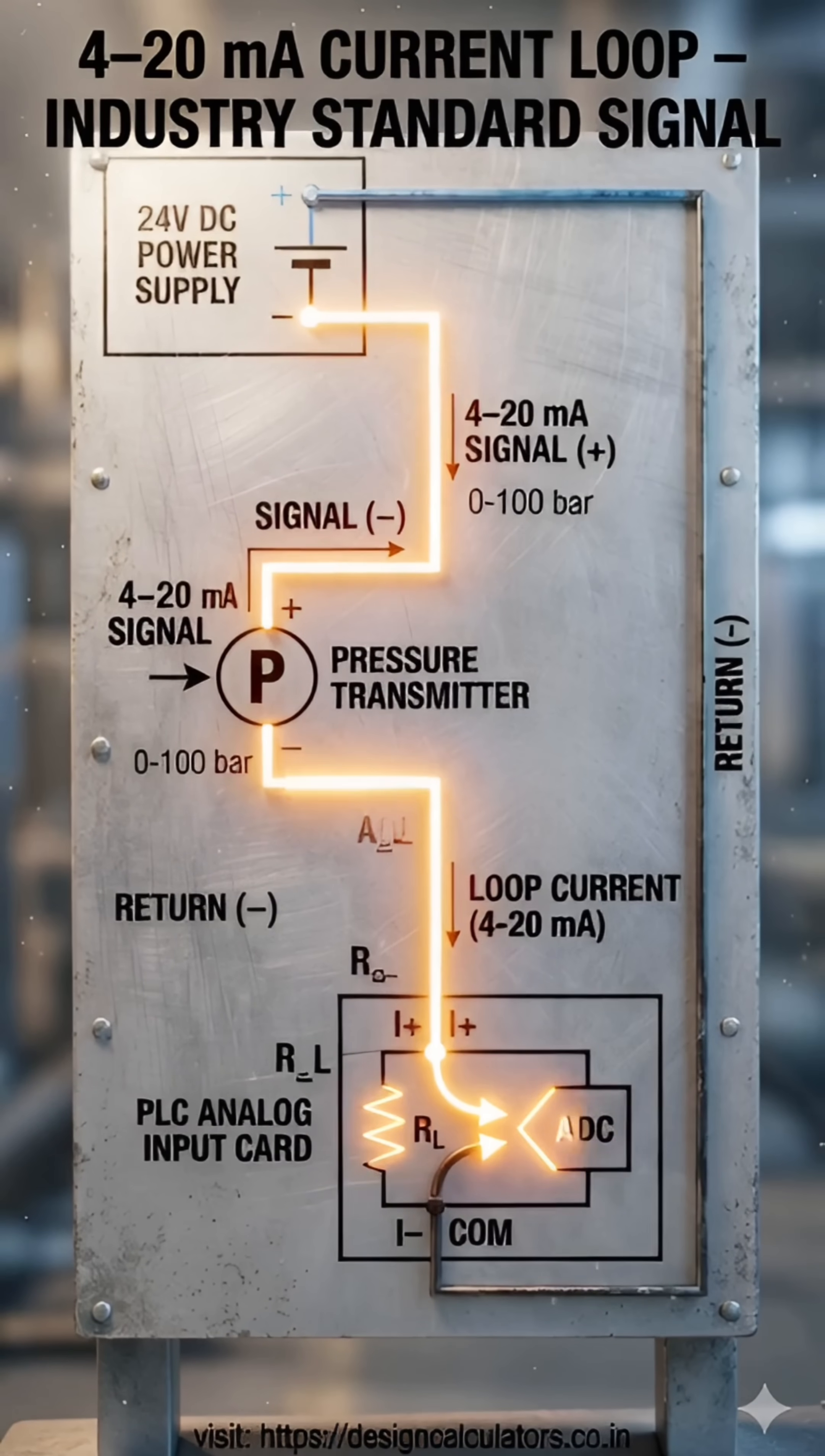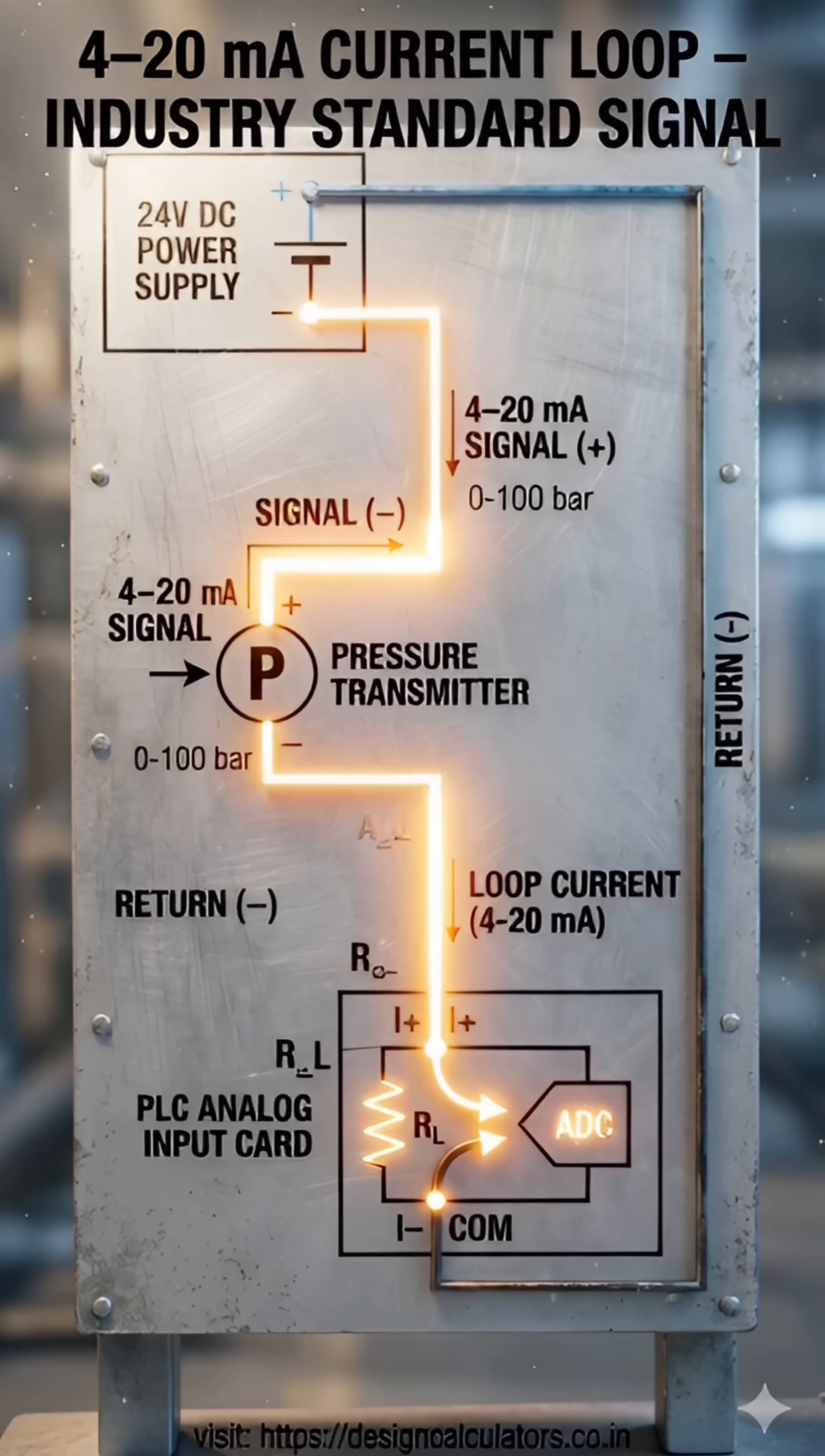Behind every accurate factory signal, there is a hidden hero, the 4 to 20 milliamp current loop.